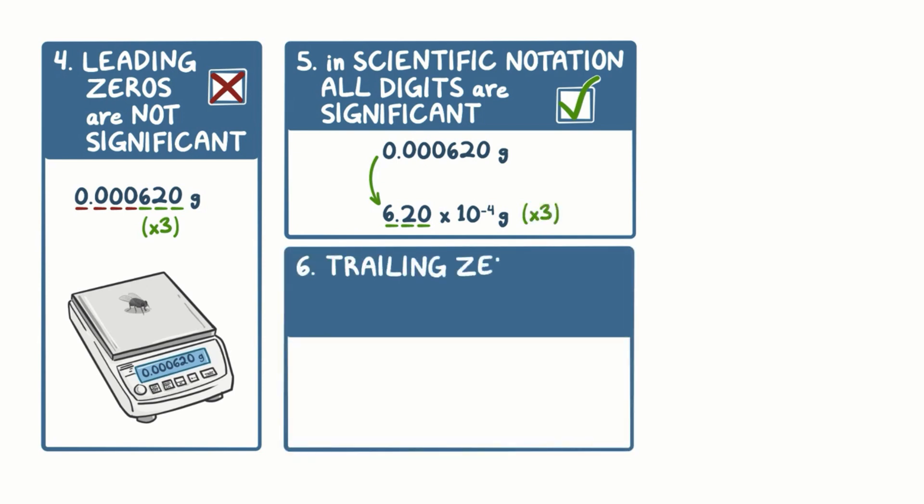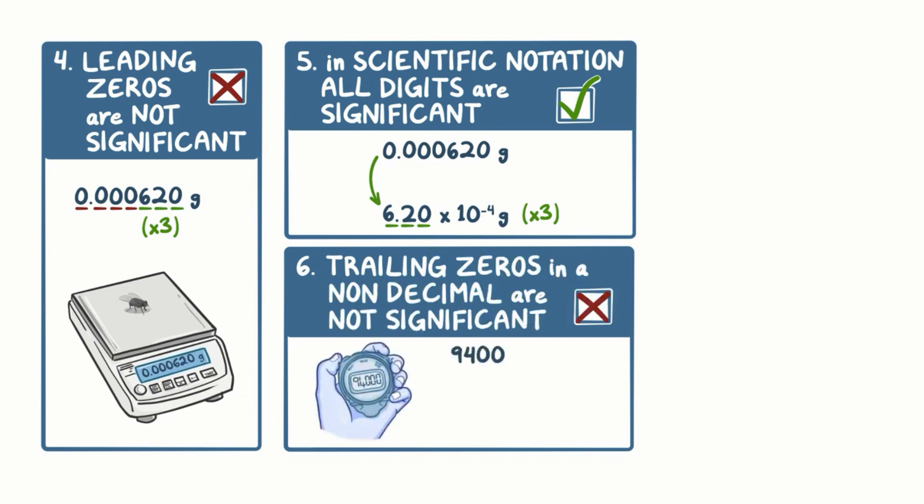Rule 6 says that trailing zeros in a non-decimal number are not significant. Say we had 94,000 seconds as our measurement. The trailing zeros would be three zeros on the right side. But for this measurement, there are only two significant figures. According to Rule 6, the 9 and the 4 are non-zero digits which are significant. And these three zeros to the right are not significant. The way to make them significant would be to put a decimal point at the end. So 94,000 with a decimal point at the end would give you five significant figures overall.